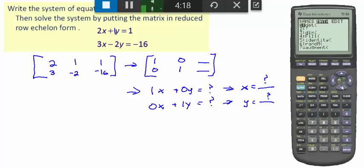And now we are going to arrow down until we get to reduced row echelon function. R-R-E-F. R-R-E-F stands for reduced row echelon function. Okay, and now we're going to hit enter.